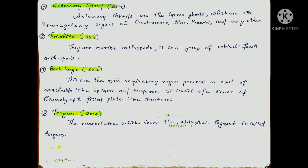The next question is tergum, asked in 2016. Tergum refers to the dorsal plate of the exoskeleton of the abdominal segment. In prawns, the tergum is the dorsal part of the exoskeleton covering the abdominal segments.